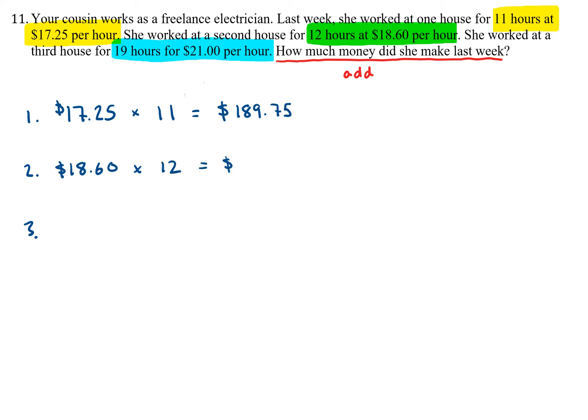House number three, she made $21 each hour and that happened 19 times. So for that third house, she made $399.